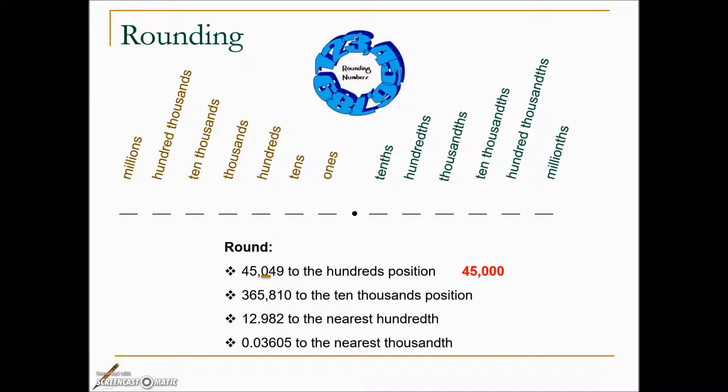The next number asks us to round to the ten thousands position — that would be the six. We look immediately to the right, which is a five. Five or greater is our rule, so we add one to our rounding position. The six becomes a seven, and we replace the remaining digits to the right with zeros, leaving us with 370,000.